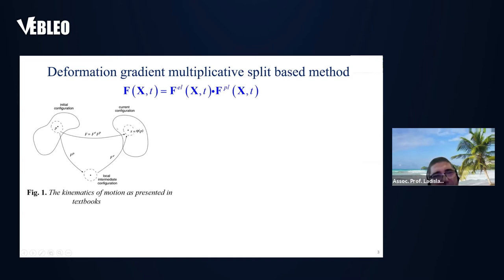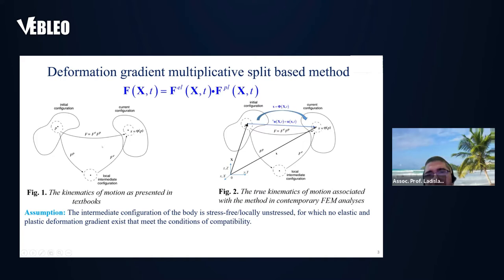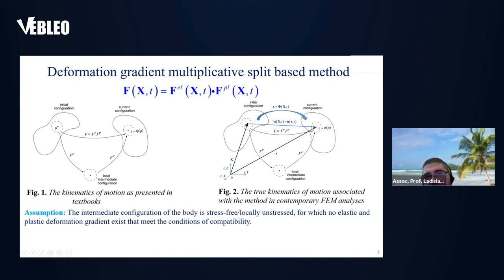What we don't like about this kinematics is that it is not suitable for calculation, because the material point moves during deformation from one point to another without the existence of a displacement field. If you look at the kinematics as it is implemented in finite element analysis, the method considers the kinematic of motion properly between the initial and the current configuration where the displacement field is properly considered, but it neglects the motion between configurations — the point moves into the intermediate configuration without displacement, which does not comply with the physics of motion.